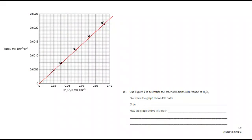Use figure two to determine the order of reaction with respect to H2O2. State how the graph shows this order. Well you will be familiar with characteristic graph shapes for zero order, first order and second order. This one is the characteristic graph shape for first order. And why is that?